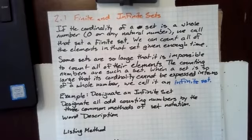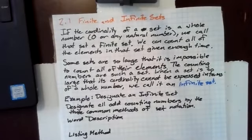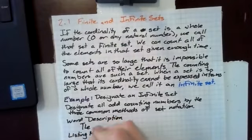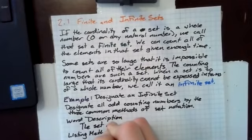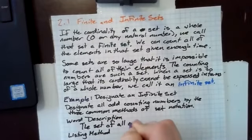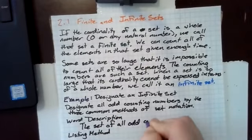Example: We're going to designate an infinite set. In particular, we're going to designate all odd counting numbers by the three common methods of set notation. First, we'll do a word description, which is simply the set of all odd counting numbers.